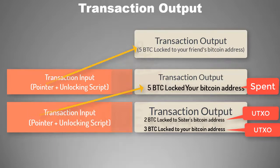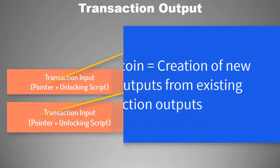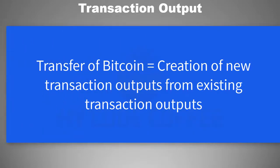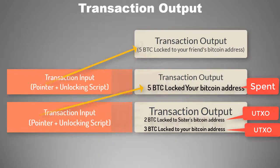Transferring Bitcoin from one person to another — or spending Bitcoin — simply means creating new transaction outputs from existing unspent transaction outputs. In this process, existing transaction outputs become dead or spent, and new unspent transaction outputs are created. Whenever a transaction happens, some UTXOs are removed from the UTXO pool and some new transaction outputs are added to the pool.